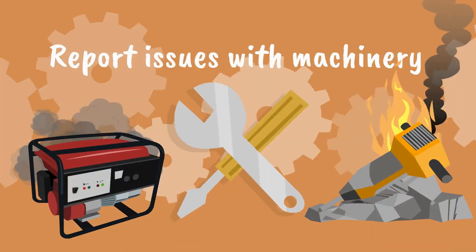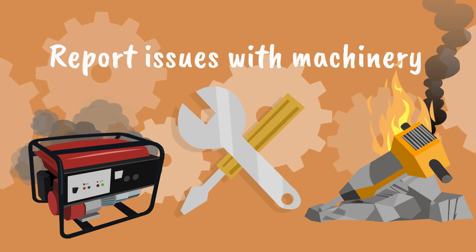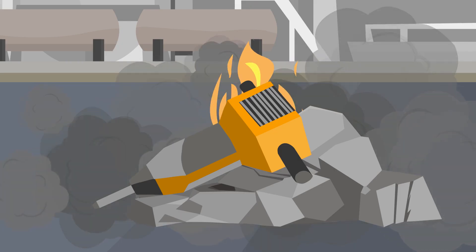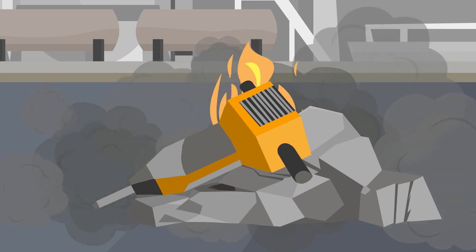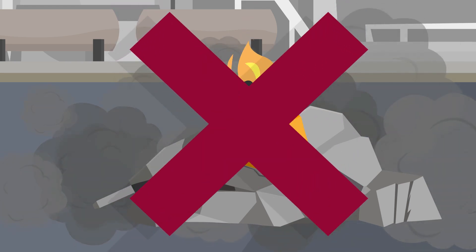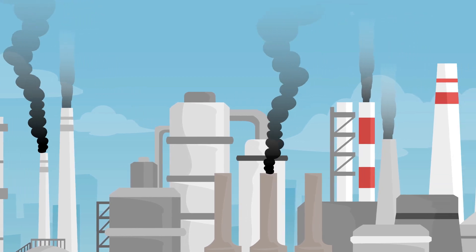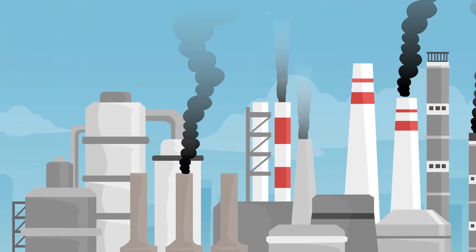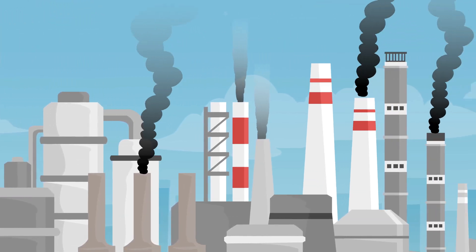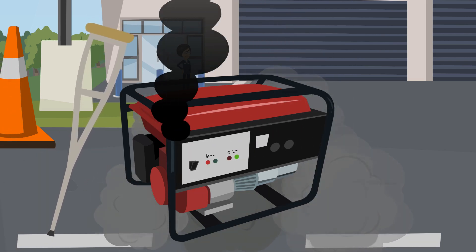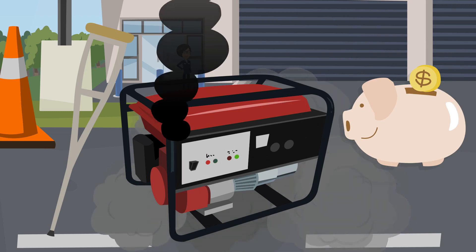Report issues with machinery when you see them. If you see a piece of machinery which is obviously pouring out smoke or has a mechanical problem, stop using it straight away. Any mechanical problem with a machine could result in a significant increase in air pollution, and using damaged equipment could be dangerous to you and result in more damage and cost if it is not fixed.